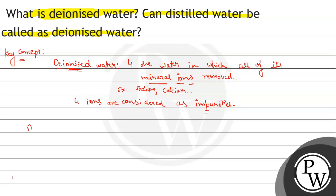What is distilled water? It is nothing but when we boil the water, it evaporates, and then it recondenses.